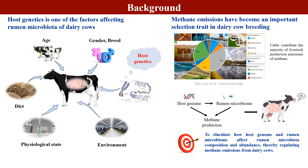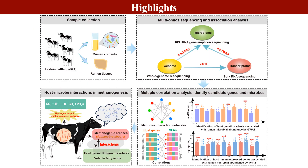We know the composition of rumen microorganisms in cattle is affected by many factors, one of which is host genetics. In this study, we aim to elucidate how the host genome and rumen microbiome affect rumen microbiota composition and abundance, thereby regulating methane emissions from dairy cows. This study used matched genome, transcriptome, and microbiome sequencing data of the rumen through a single large-scale cohort of 574 Holstein cattle, and performed genome-wide association study and transcriptome-wide association study to identify the genetic variants and rumen genes influencing the rumen microbiota.